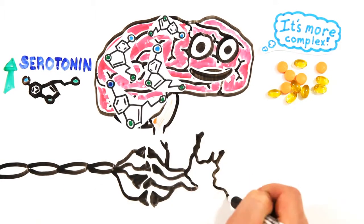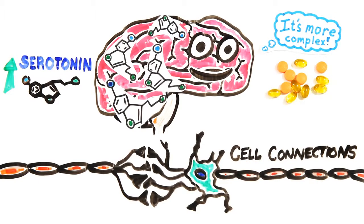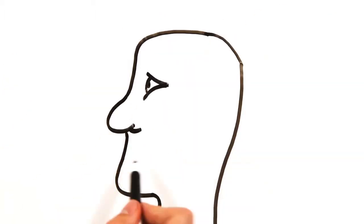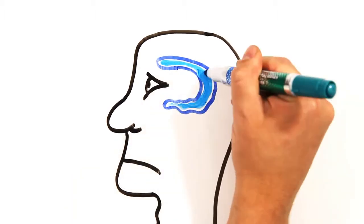In recent years, scientists began to notice that brain cell growth and connections may actually play a larger role. When we look at the brain of a depressed person, studies show that the hippocampus tends to be much smaller than average.